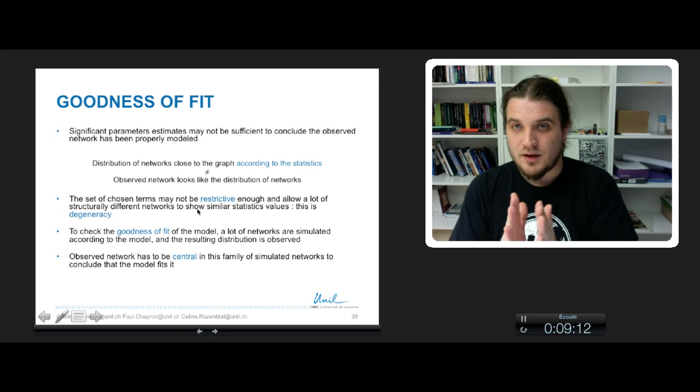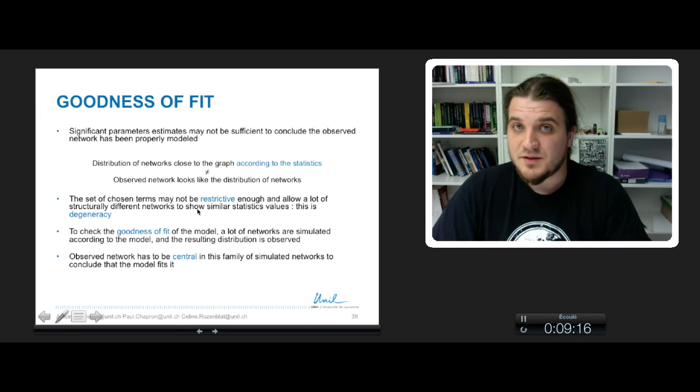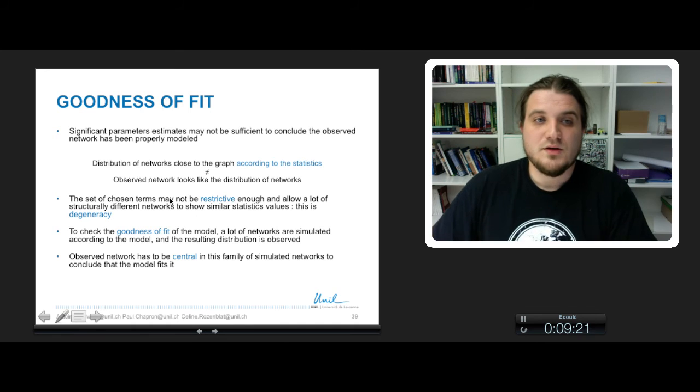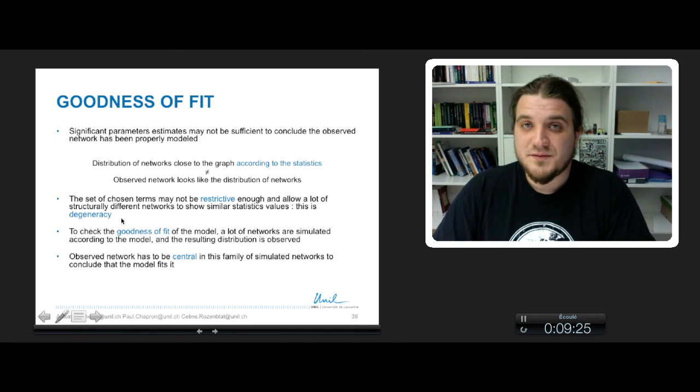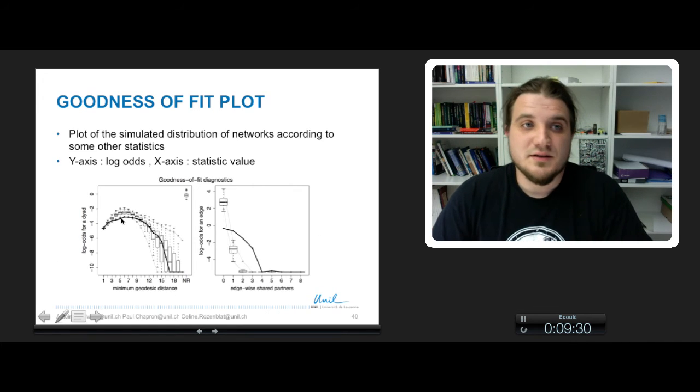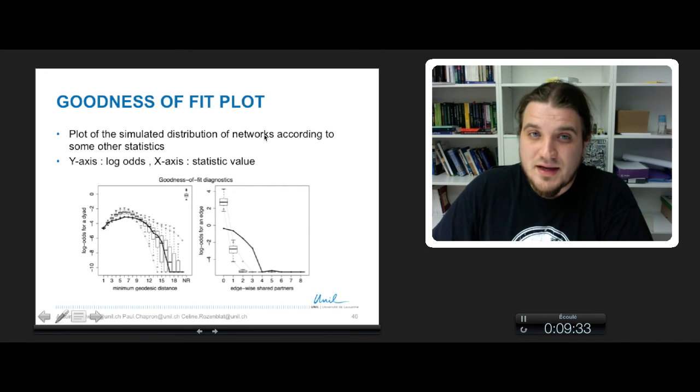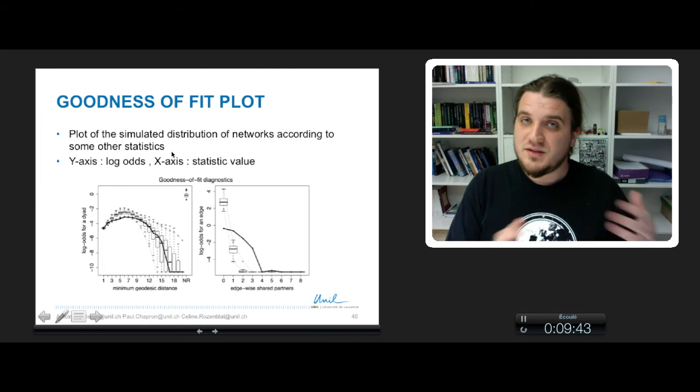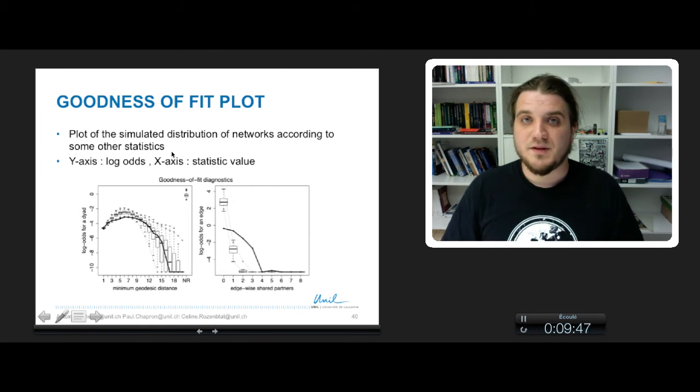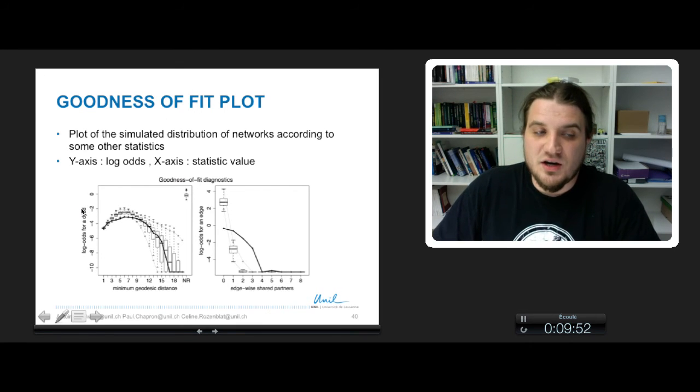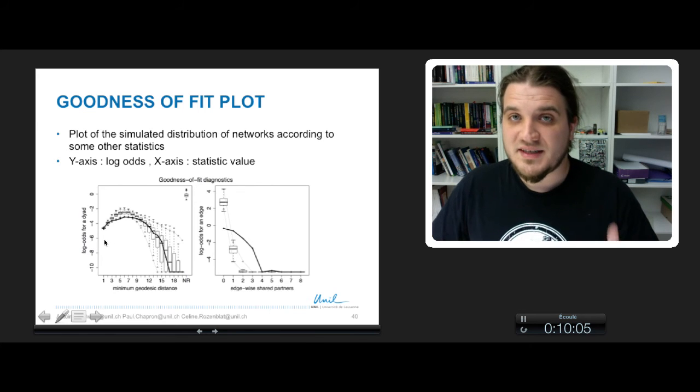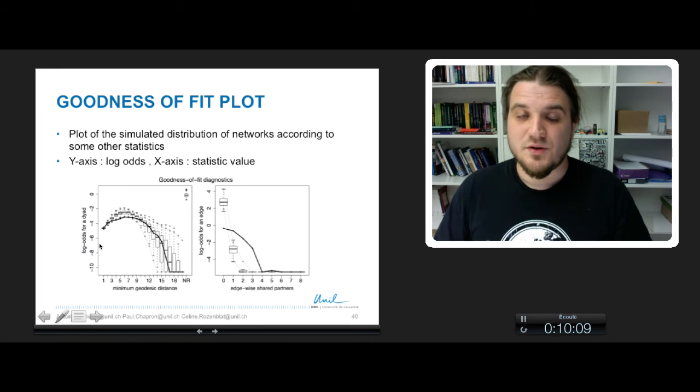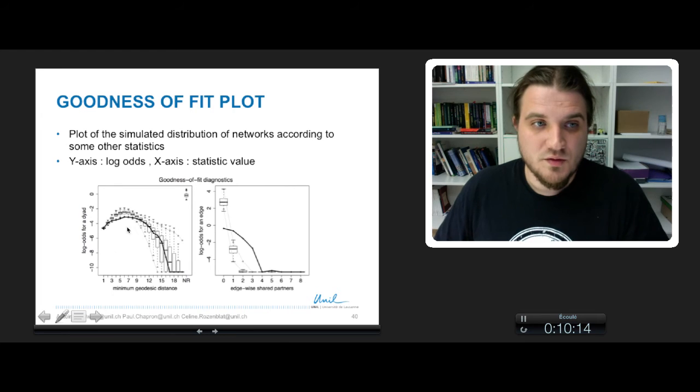If the observed network is really central in the distribution and the distribution is acute, really well narrow around the observed network, it means that our family of networks is well constructed. To do that, we use the goodness of fit function of the ERGM package of R. This goodness of fit function will plot the simulated distribution of networks according to some other statistics - statistics that describe well the network. You can choose your own statistic to describe the network, but there are also some default statistics that give a good idea of the distribution of networks you have simulated. On the y-axis, you have the log-odds - the values of your parameters given by ERGM fitting. On the x-axis, you have the statistic value.